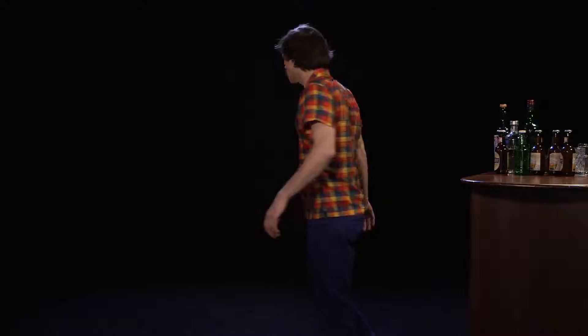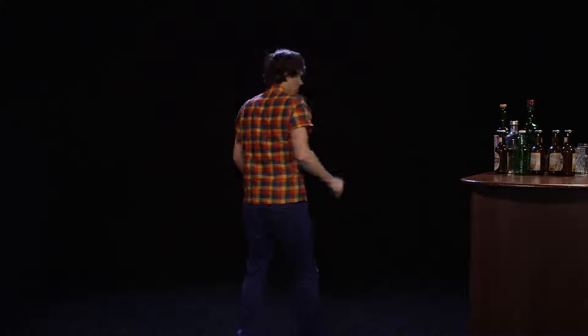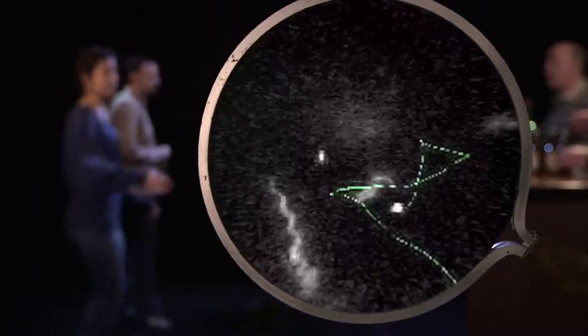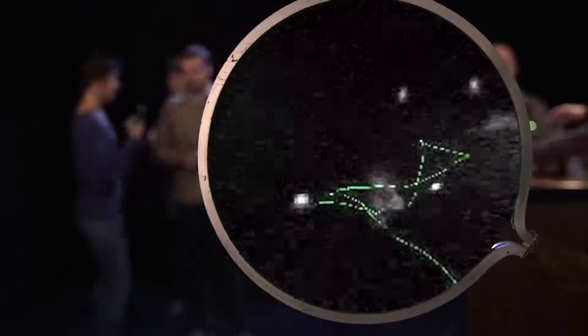What's more, bacteria move strangely. They move randomly. To be precise, like this one, they move in a straight line and then change direction. Another straight line, and there it goes. Another change in direction.